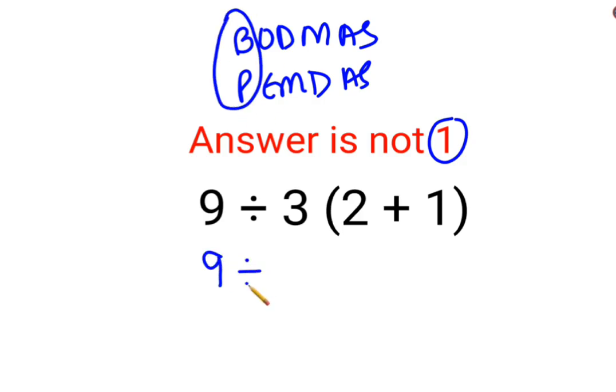So we'll keep the rest of the question as it is, and 2 plus 1 is 3. And since there is no sign between 3 and this bracket, it means it is multiplication. Now at this point, a lot of people think that it is just 9 divided by 3 multiplied by 3 is 9, so answer is 1.